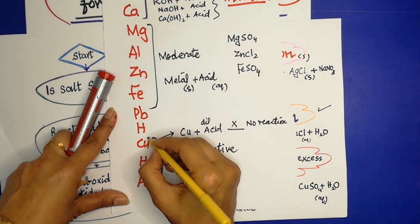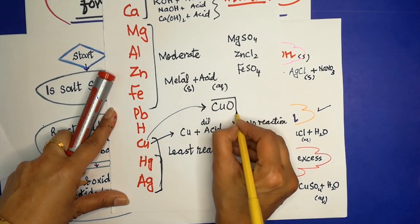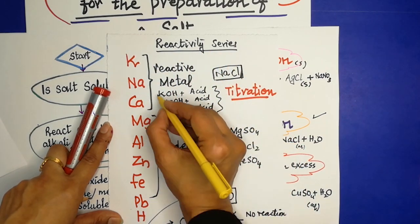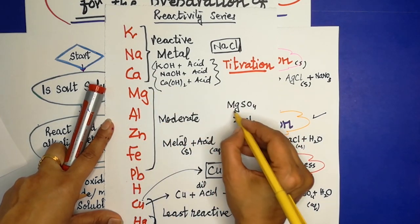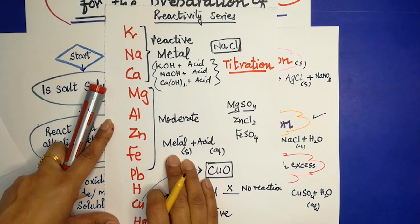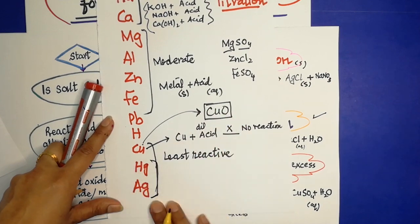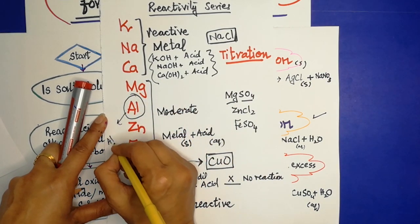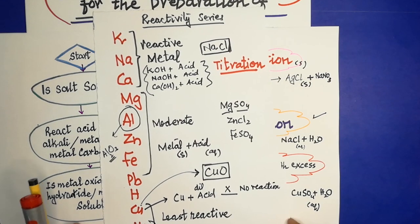For least reactive metals like copper, we use their oxide or carbonate instead. So to prepare a copper salt, we use copper oxide with acid. In summary: very reactive metals → use the hydroxide; moderate reactive metals → use the direct metal with dilute acids (excess method); least reactive metals → use the oxide or carbonate. Note that aluminium has an oxide layer on its surface, so it does not appear to react with dilute acids unless that layer is removed.